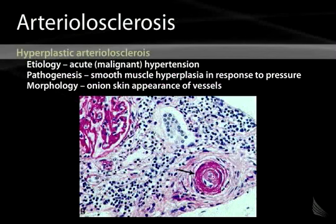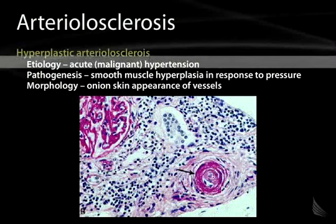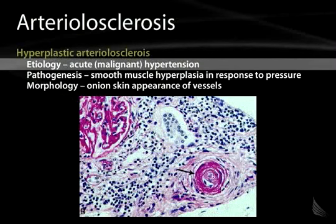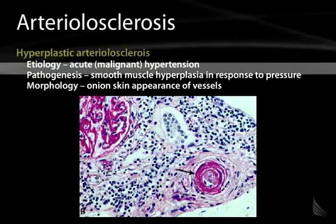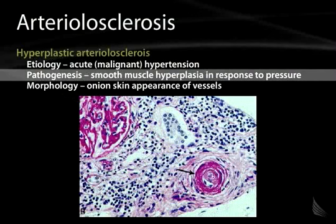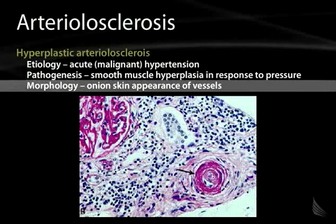Hyperplastic arteriolosclerosis is associated with acute or malignant hypertension. Its pathogenesis is related to smooth muscle hyperplasia in response to pressure, and the morphologic appearance is one of an onion-skin appearance of vessels, as demonstrated in the picture.